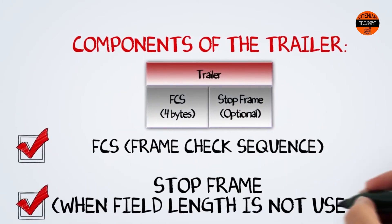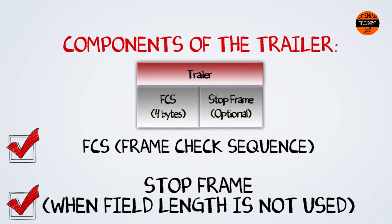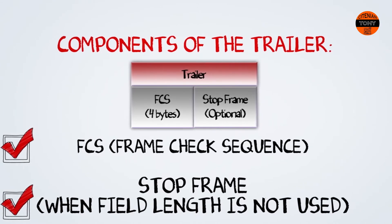The trailer comes at the end of the frame and contains two parts: the FCS or frame check sequence, as well as the stop frame, which is optional when the field length is being used. The frame check sequence field is used for error correction. The sender creates a calculation based on the content of the packet and places it in this field. When the frame arrives at its destination, the receiving computer creates its own calculations and compares them to those placed in the FCS. If these calculations do not match, the receiving computer disposes of the frame.